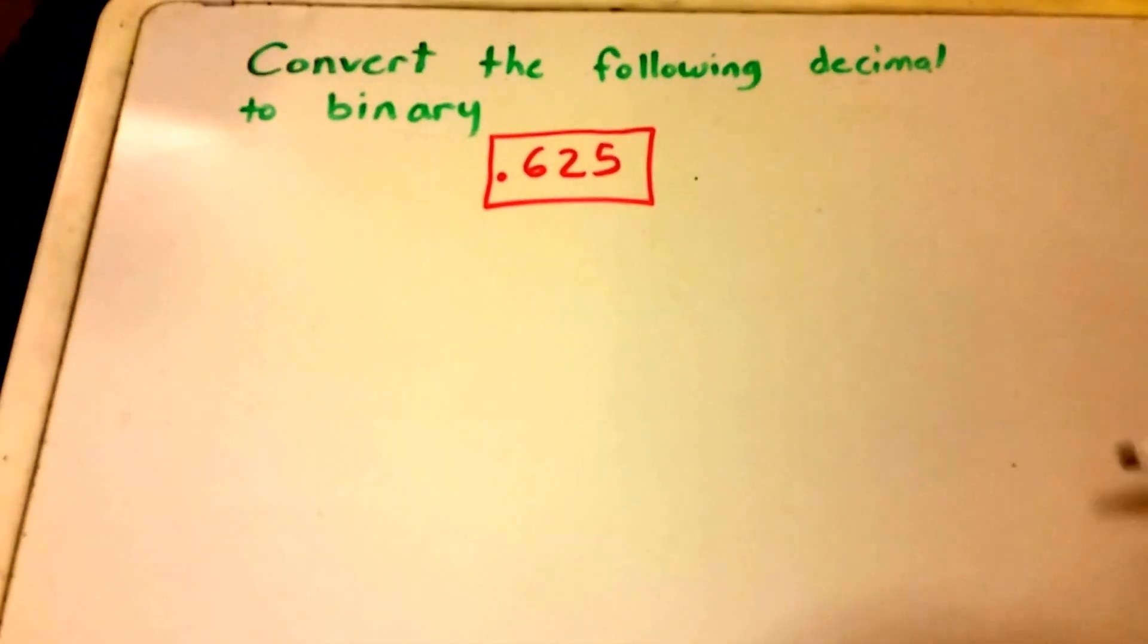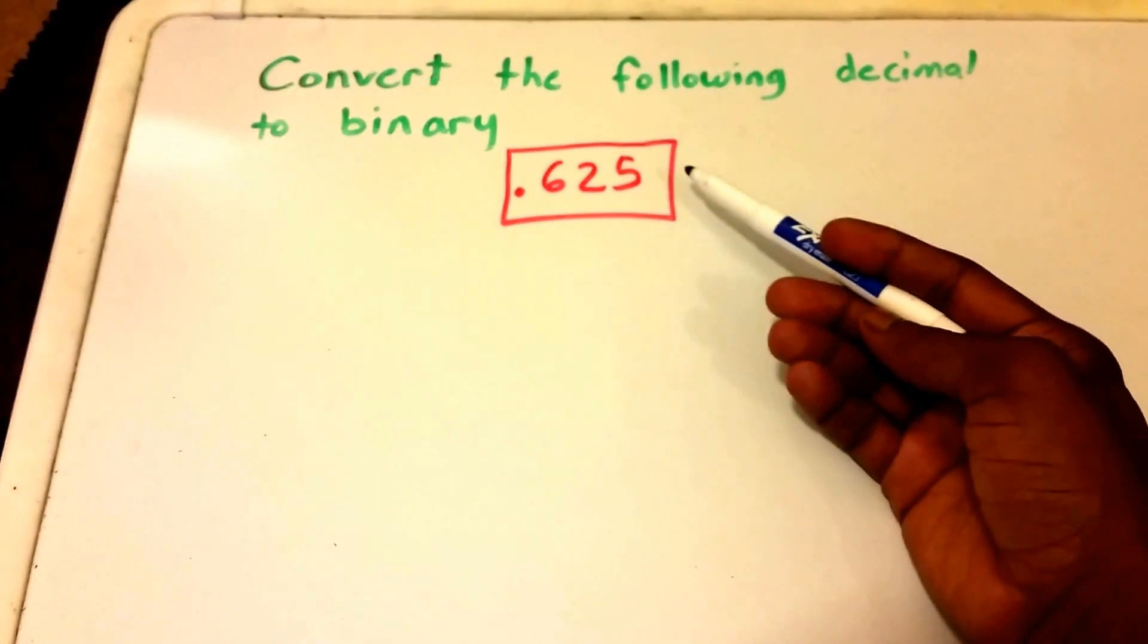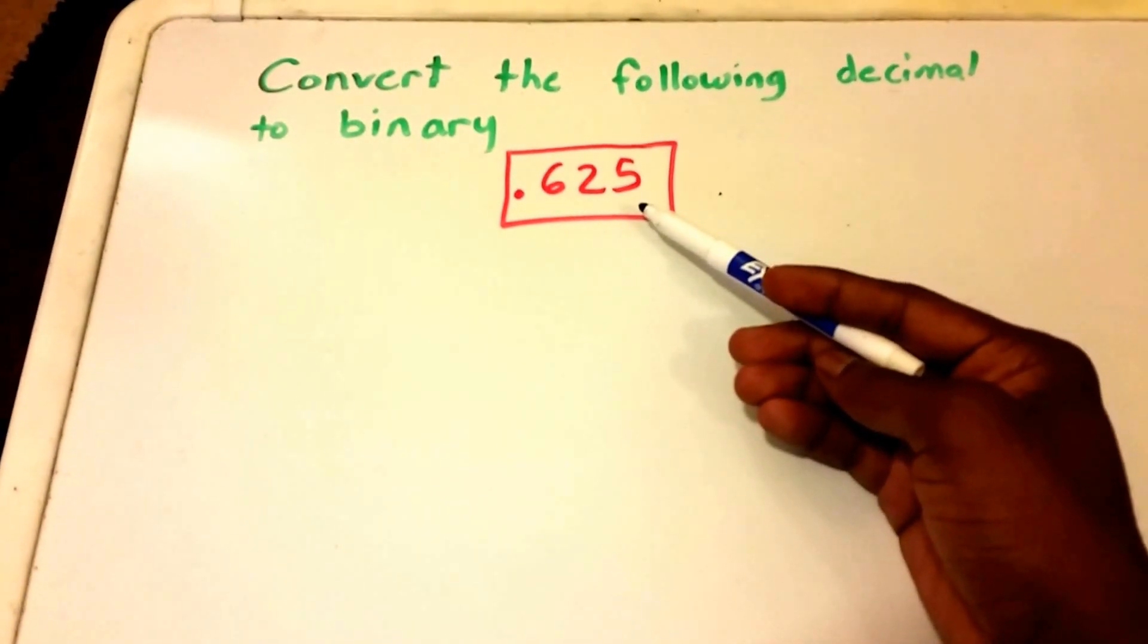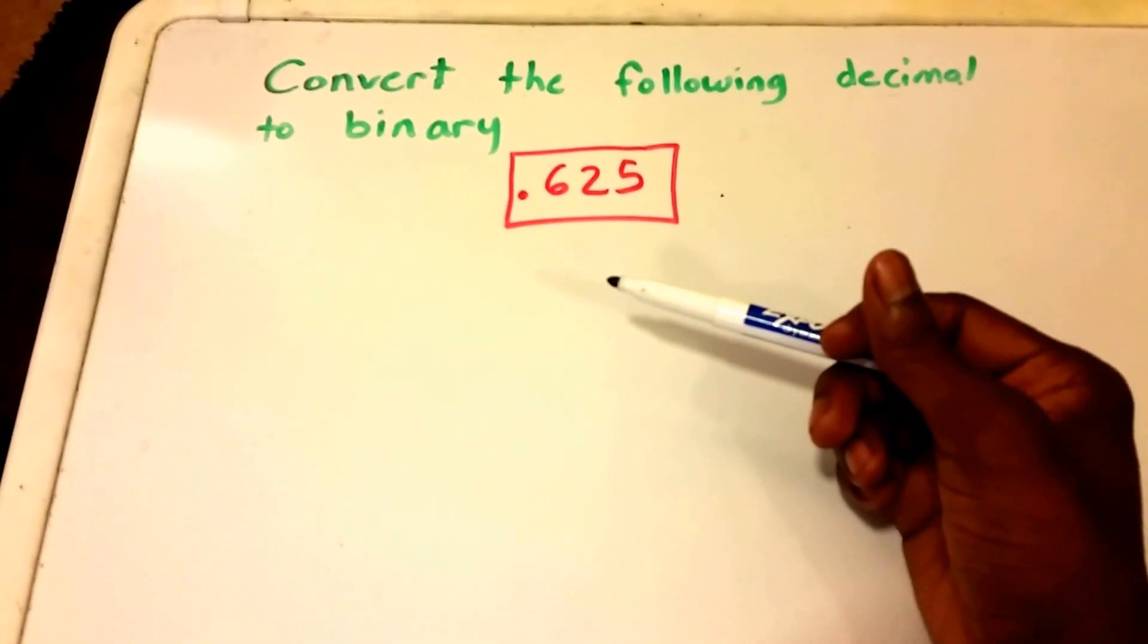Hey guys and welcome to this video. We want to convert the following decimal to binary. So here in red I have our binary number which is 0.625 and we want to convert it to a binary number.